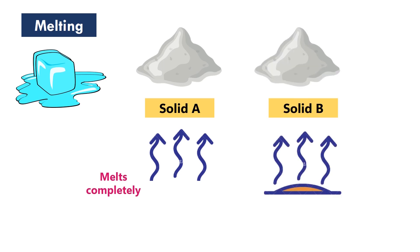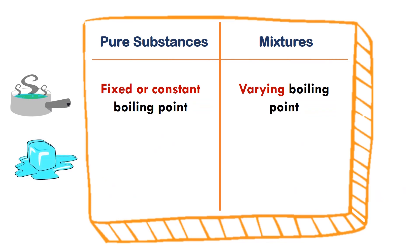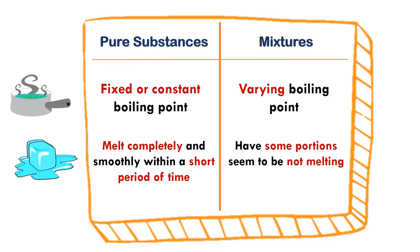We can infer that solid A is a pure substance, while solid B is a mixture. Because pure substances melt completely and smoothly within a short period of time, while mixtures have some portions seem to be not melting. Thank you.